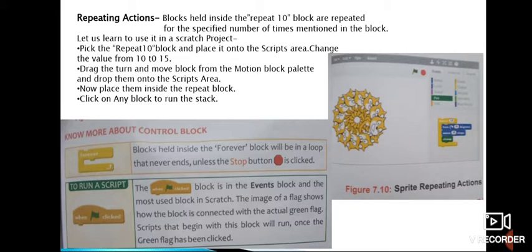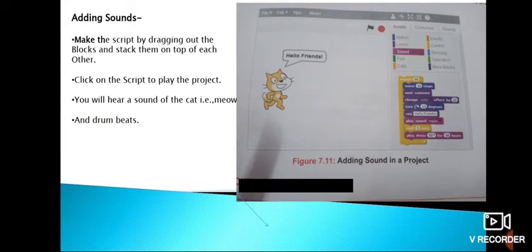A loop is a sequence of instructions that is repeated until a certain condition is satisfied. Repeat instructions help in controlling the execution of the program. We can repeat the actions of the sprite as many times as needed. We will get various blocks to repeat the action in the Control block category. Where you will get? In the Control block category. So, blocks held inside the Repeat 10 blocks are repeated for the specified number of times mentioned in the blocks. So, don't forget, two blocks Forever and When Flag Clicked, these are under Control block.